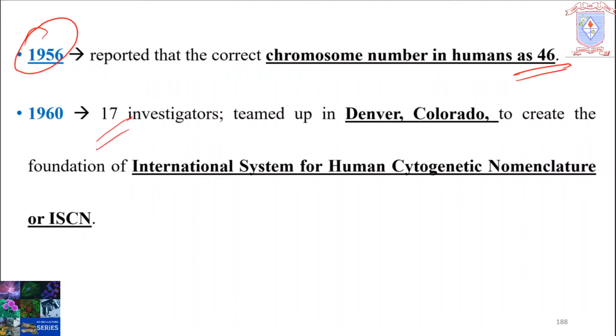To effectively describe chromosomal changes in a systematic manner, a group of 17 investigators who had previously published human karyotypes teamed up in Denver, Colorado in 1960 to create the foundation of the International System for Human Cytogenetic Nomenclature, or ISCN.